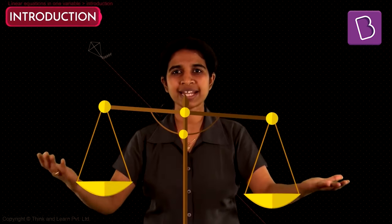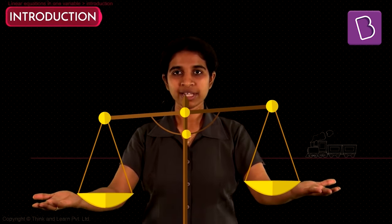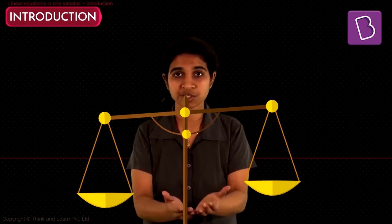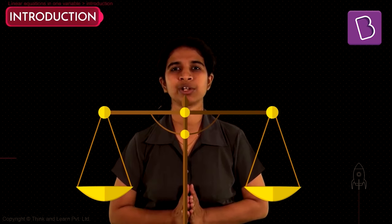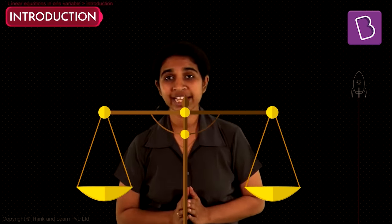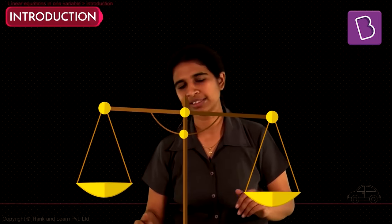You can visualize an equation as a beam balance — the left-hand side on the left pan and the right-hand side on the right pan. The equal-to sign tells you that even if you remove your hands, it will stay in perfect balance — it won't tilt to one side or the other. The key to solving an equation is always maintaining this balance. If you disturb the balance, you're getting the answer wrong — it's as simple as that.